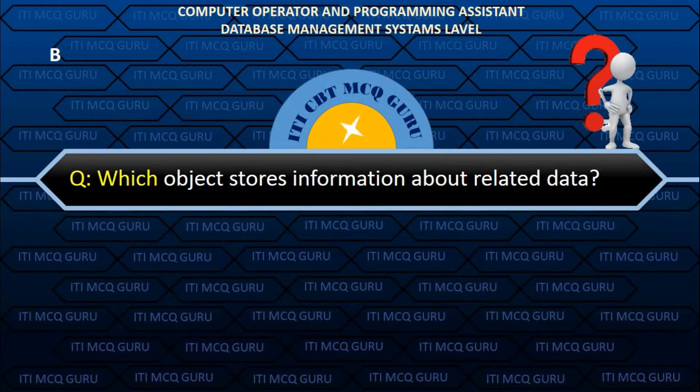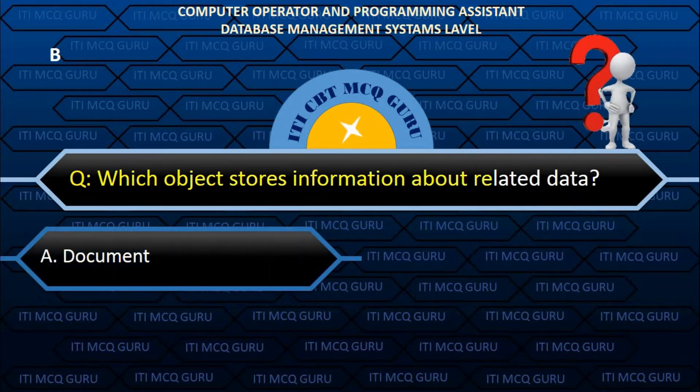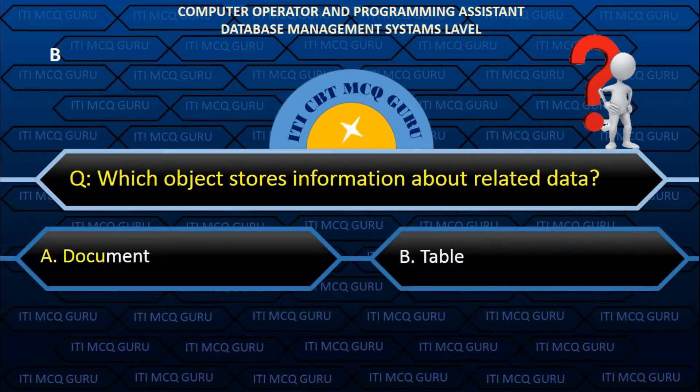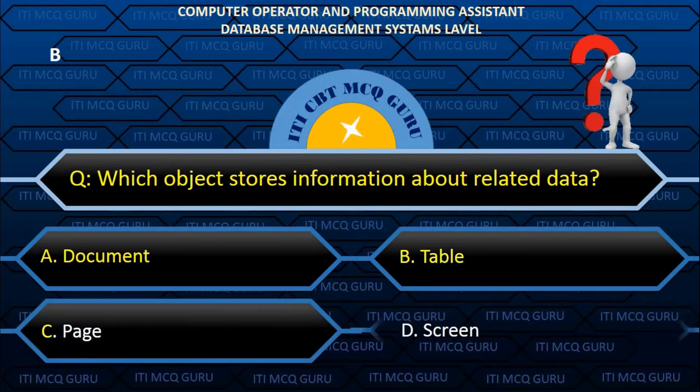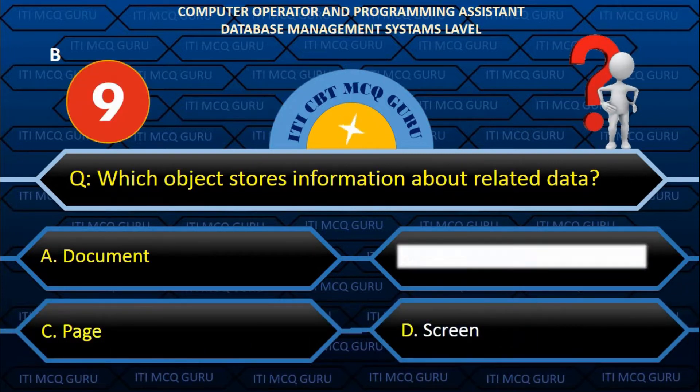Which object stores information about related data? B. Table.